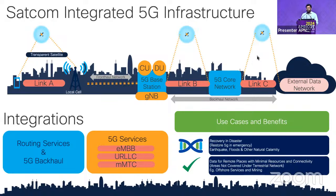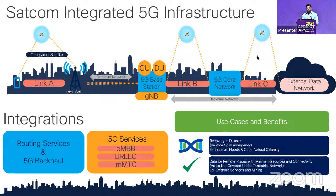Using satellite as a backup link enables 5G connectivity restoration in disaster or emergency scenarios such as earthquakes or natural calamities. For areas not covered by terrestrial networks, these links can provide connectivity. All three 5G service types — enhanced mobile broadband (eMBB), ultra-reliable low latency communication (URLLC), and massive machine type communication (mMTC) — can be supported using these satellite technologies.